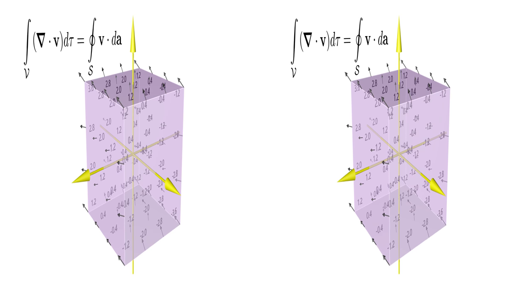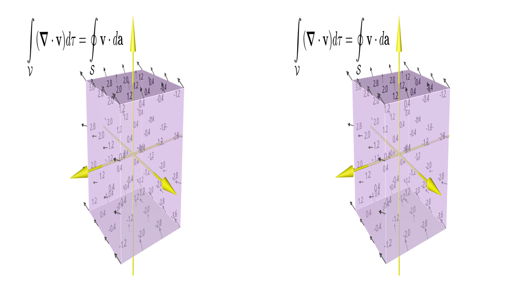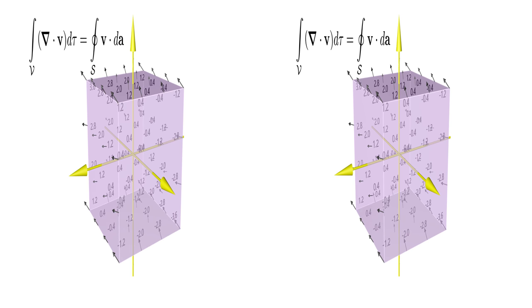The divergence theorem can be used to rewrite a volume integral to a surface integral or vice versa. It plays an important role in Gauss's law.